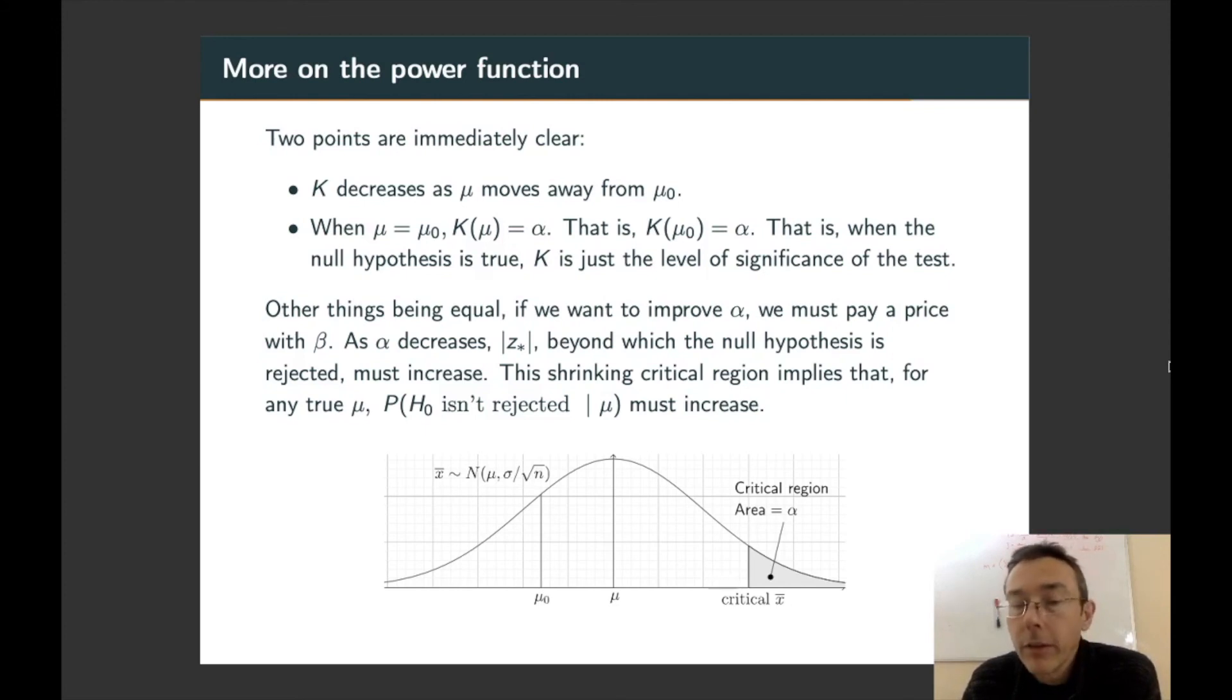And if you're decreasing that shaded area there, the critical region, then the probability that H-naught is not rejected, given any value of mu, any true value of mu, is just going to increase.